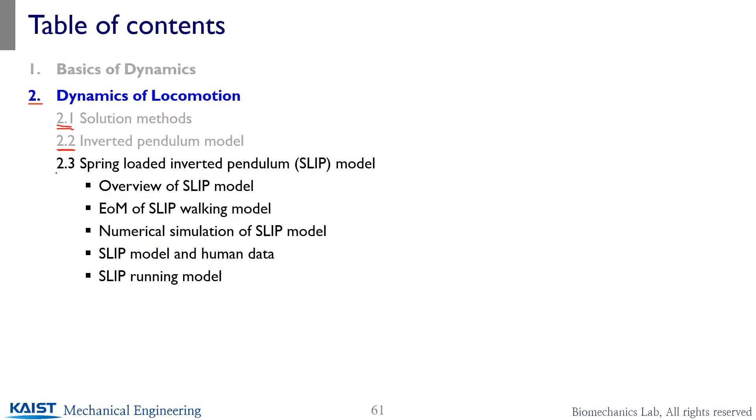So for chapter 2.3, we are going to now introduce a new model parameter, which is spring, and then how those spring and mass systems are able to represent locomotions like walking and running. And we are going to go over brief introductions and solution steps like equations of motion and so on, and then how human data are compatible to those model predictions.